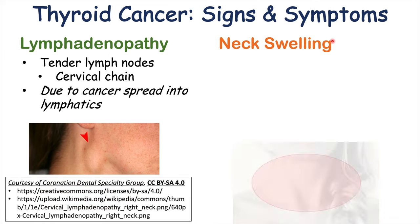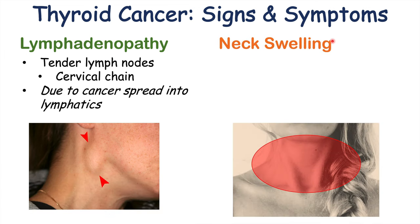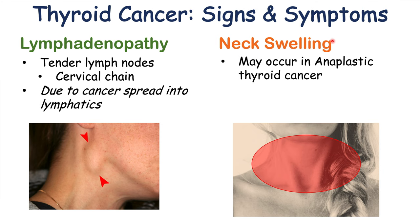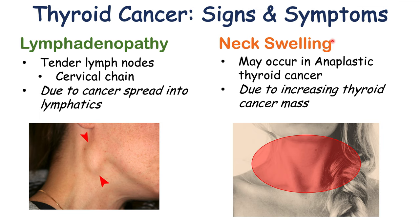We can also see neck swelling in some patients, where the neck visibly gets larger and larger. This occurs more commonly in anaplastic thyroid cancer, which is a rarer type that tends to occur later in life, in the sixth and seventh decade. Individuals with anaplastic thyroid cancer can often have a growing — and in some cases rapidly growing — neck mass, due to an increasing thyroid cancer mass in the patient's neck.